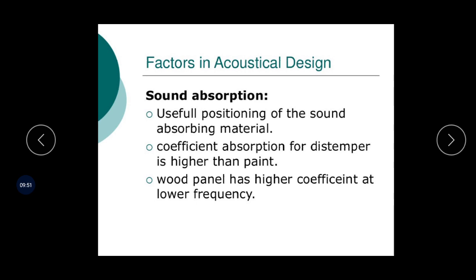This is sound absorption — this was the last point. Here one point that we have not covered is distemper. Absorption for distemper — like paint, it is a kind of paint — is higher than plain paint. So we can provide distemper if we want more absorption. And one more point: wood panels have a high coefficient at lower frequency. So wood panels also absorb more sound at low frequencies.